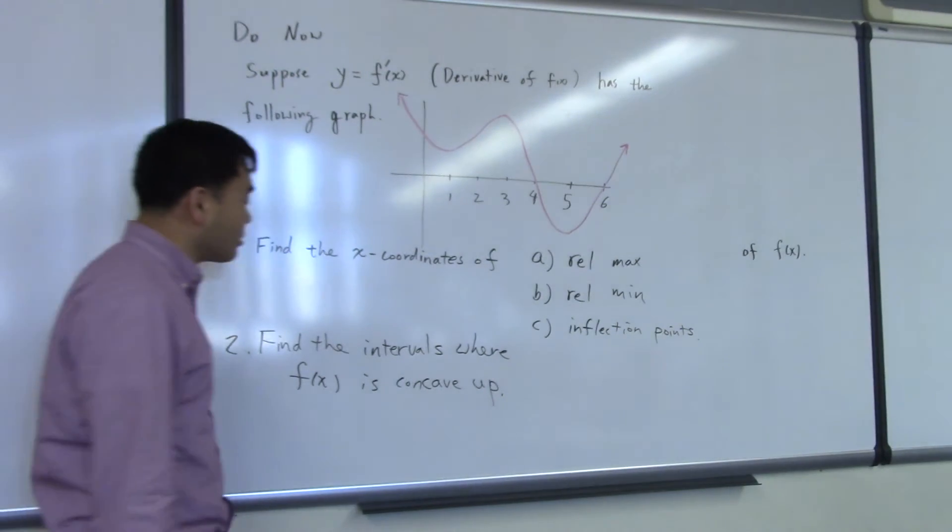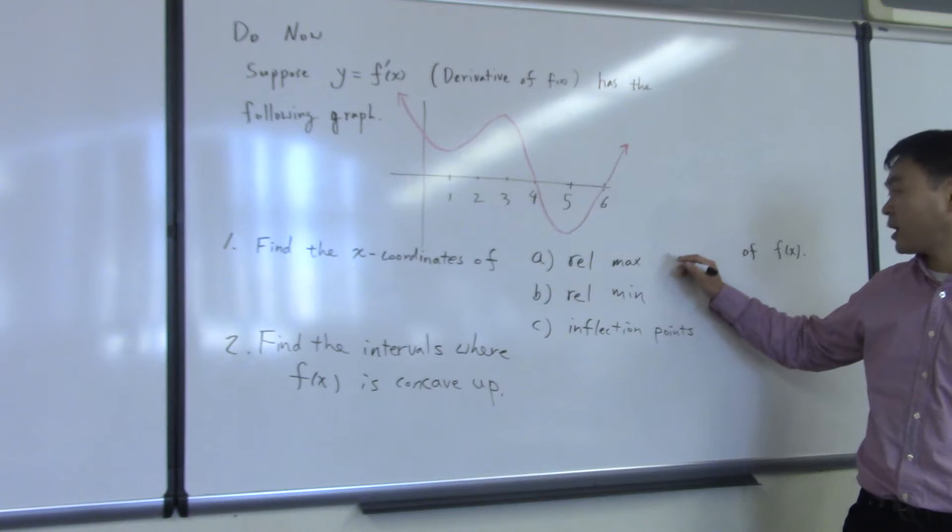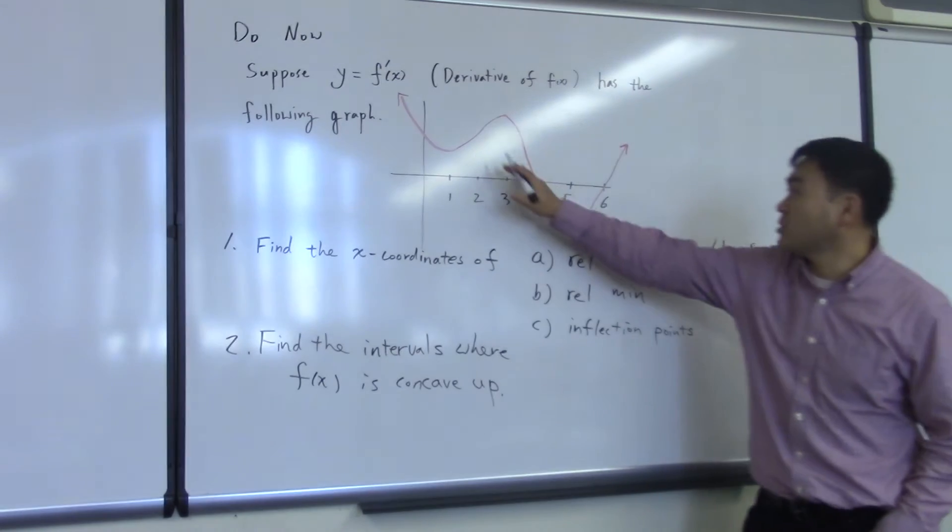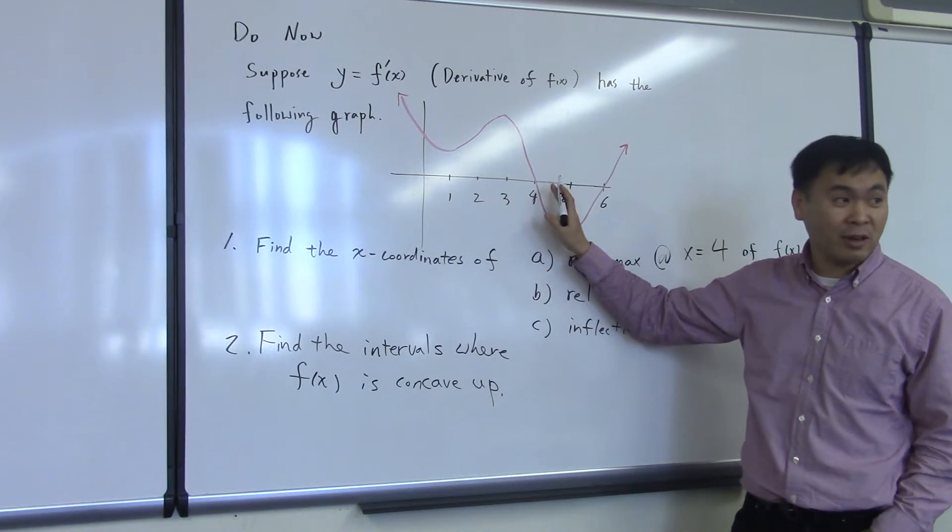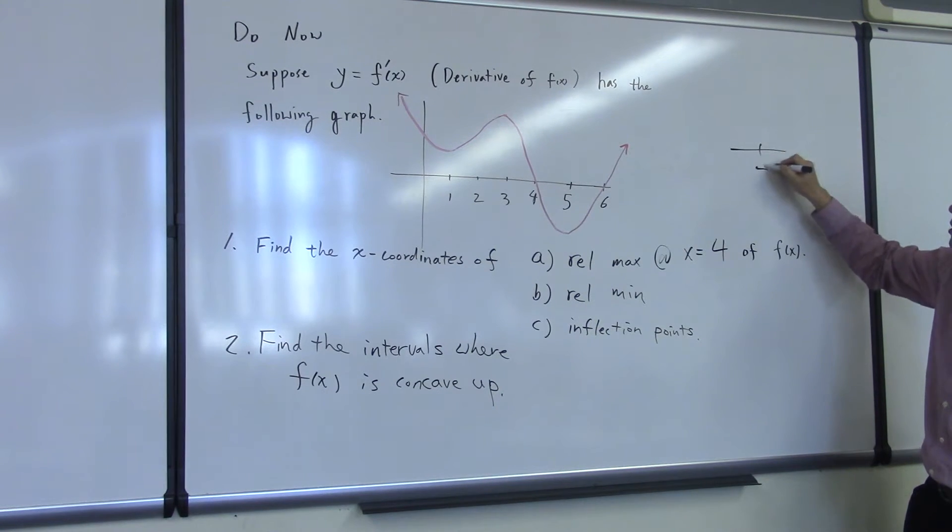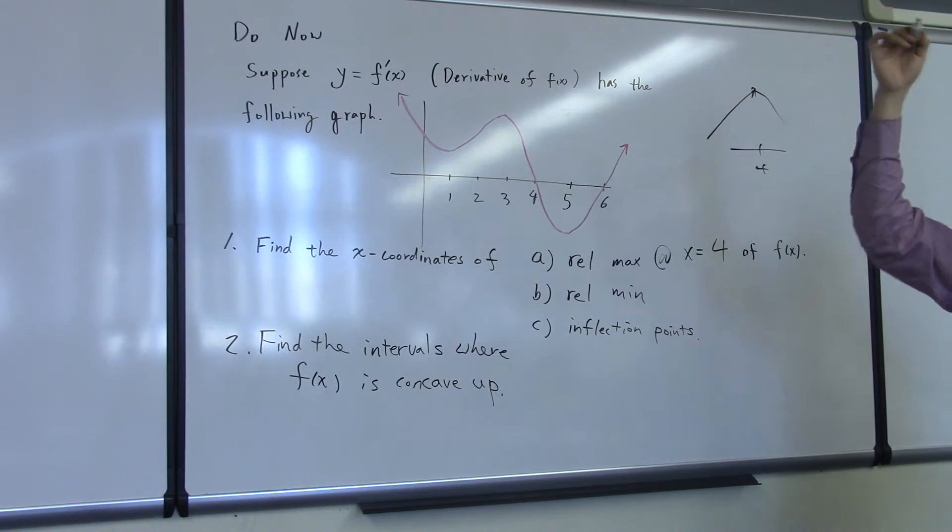So putting all that together, you can actually figure out that the relative maximum will happen at x equals 4, because it's increasing before 4 and decreasing afterwards. I mean, think about it. At 4, if the function is going up and then after 4 it's going down, what is this point? That must be a relative maximum, right?